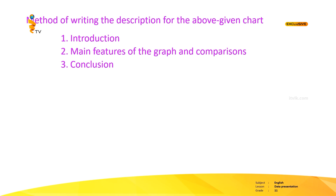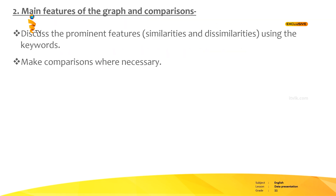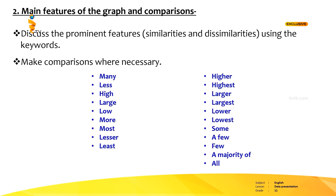Now this is the most important part — the method of writing the description of a bar graph. First, introduction. Then, main features and comparisons. Finally, conclusion. When you write the introduction, explain the chart or graph using the information given in the topic or the question, and mention the two axes. When writing the main features and comparisons, discuss the prominent features of the graph — that is, similarities and dissimilarities.